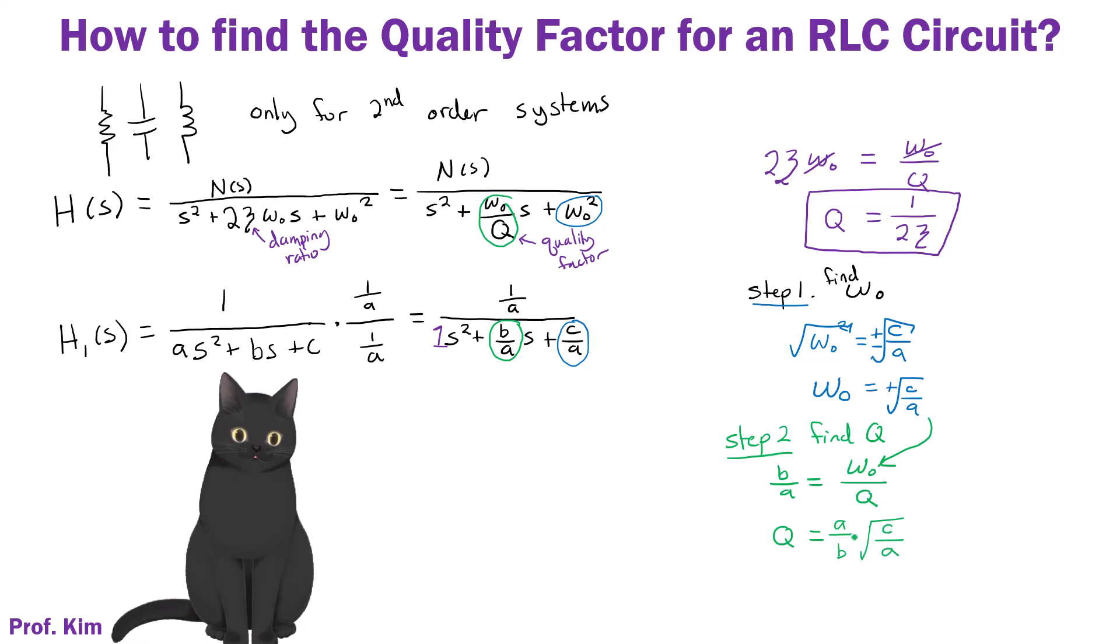And in this case, we can simplify. We can cancel out the square root of a on top and the bottom. So we get q equals 1 over b times the square root of ac. So this is a q value for the specific coefficients of our original denominator in the transfer function.